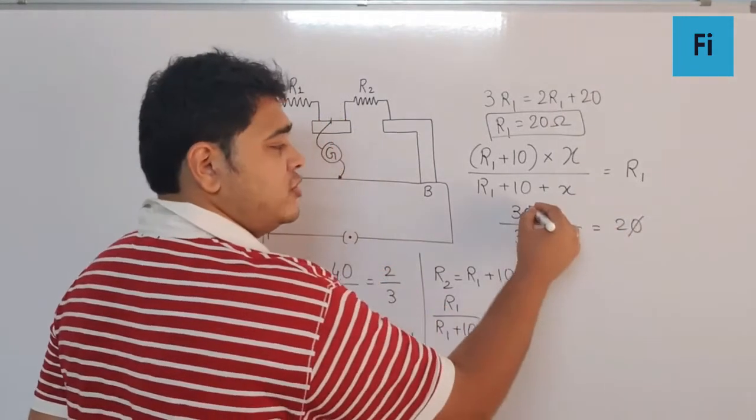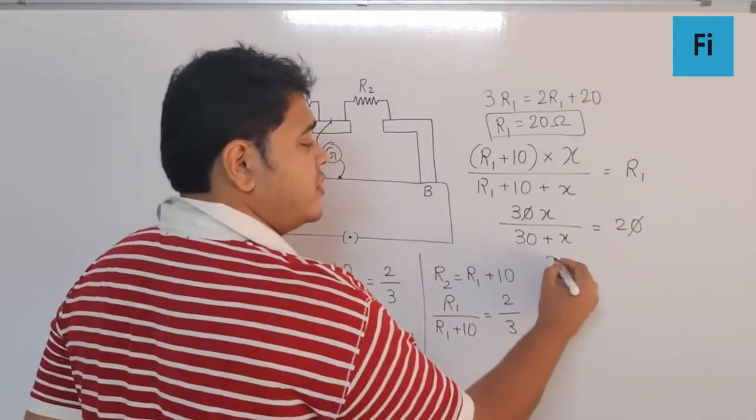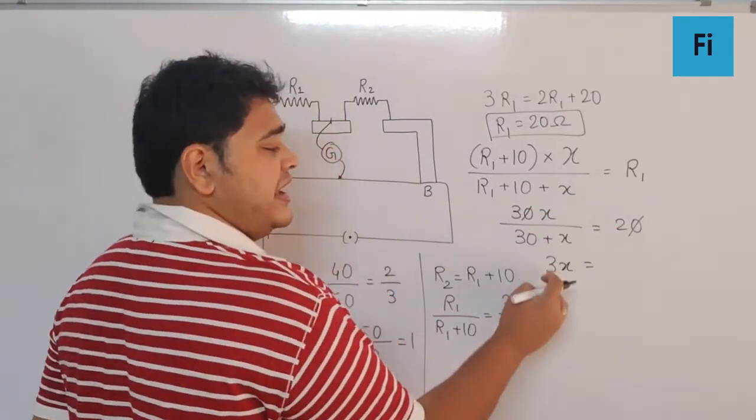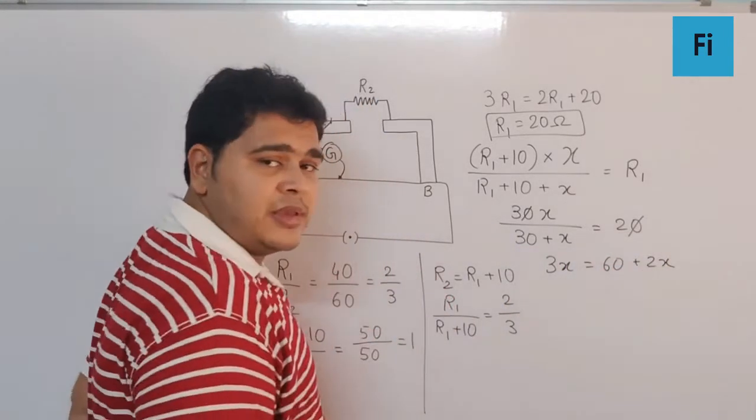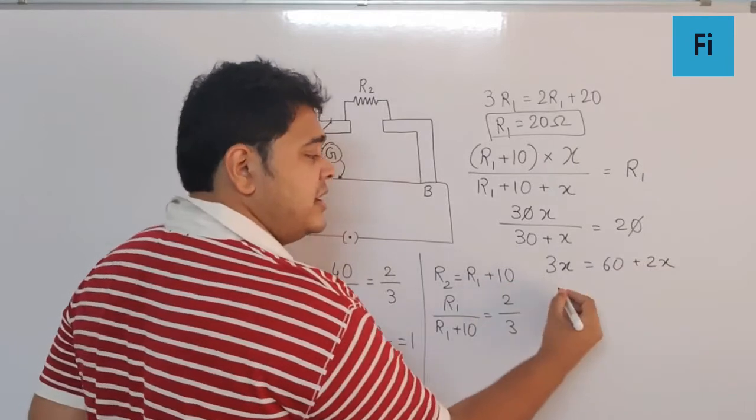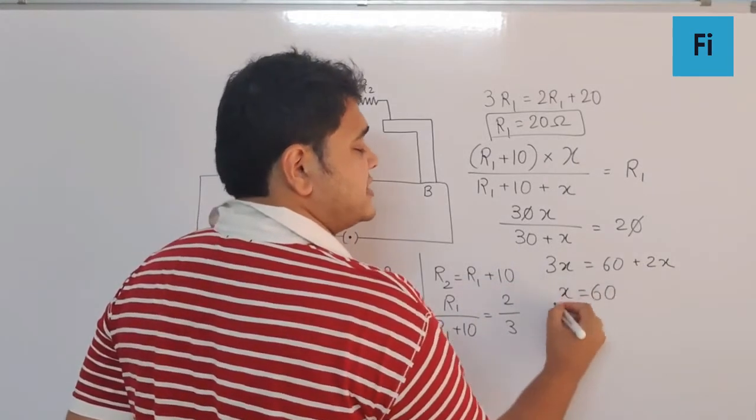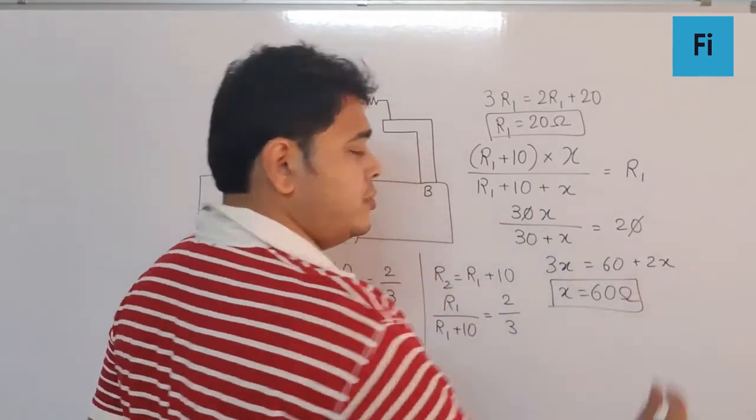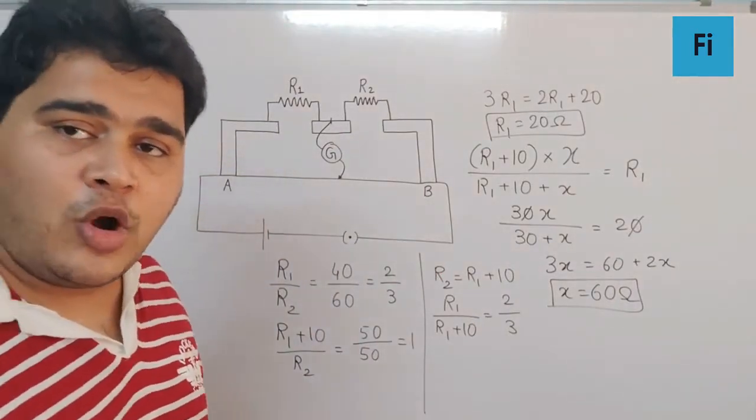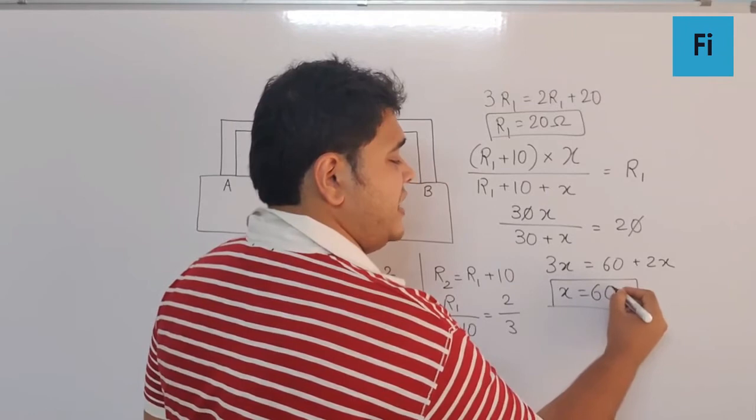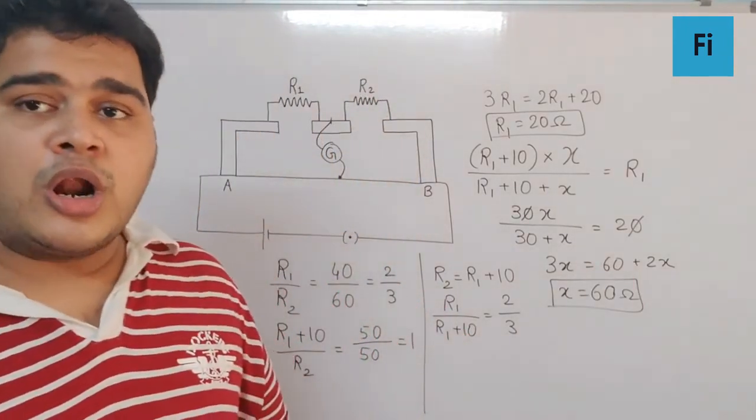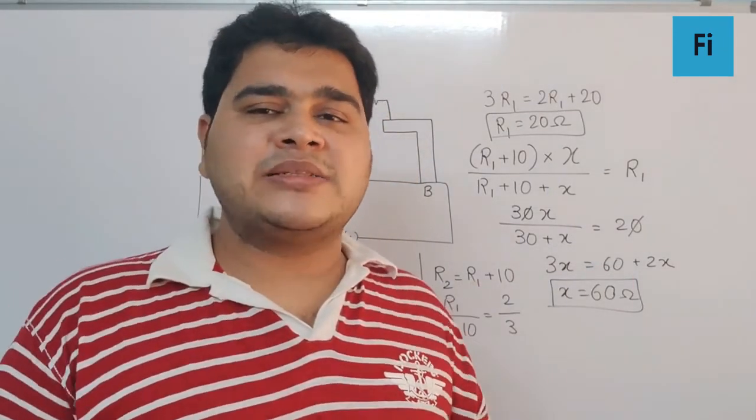Cross multiplication gives 3x equals 60 plus 2x. 2x goes on this side, and we get x as 60 ohm. So if we connect 60 ohm in parallel with R1 plus 10, we get the null point back to the initial condition.